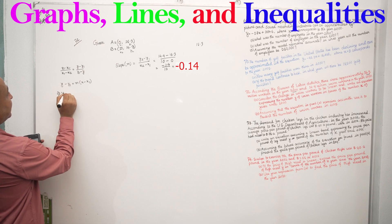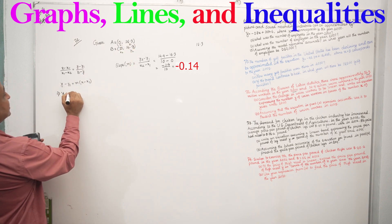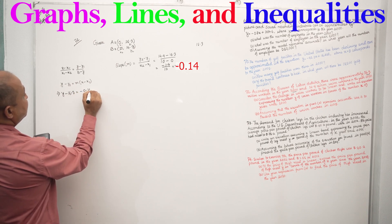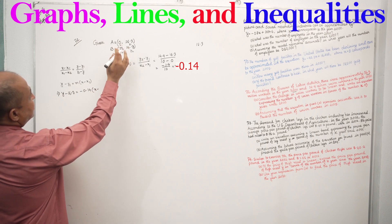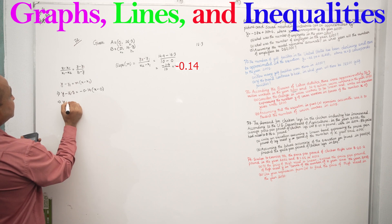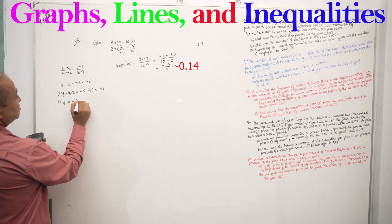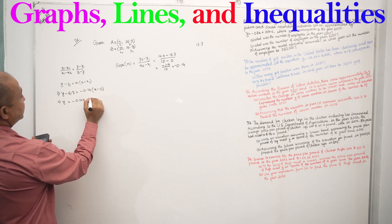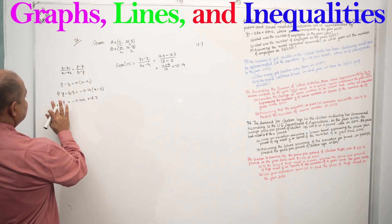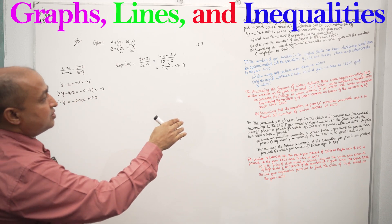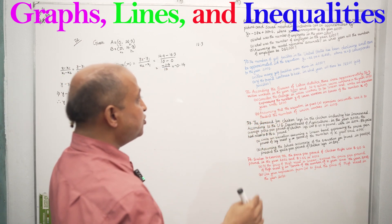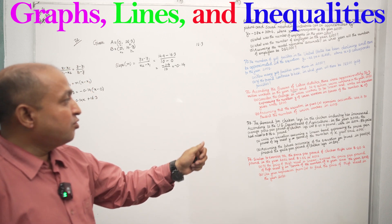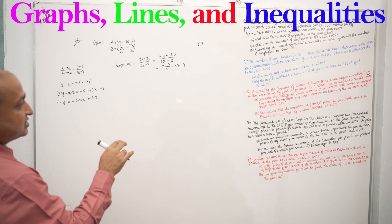Now substituting into point-slope form: Y minus Y1 equals M times x minus x1. Y1 is 16.3, M is minus 0.14, and x1 equals 0. So Y equals minus 0.14x plus 16.3. This is our linear equation. Requirement A was: consider the change in union workers to be linear and write an equation expressing the number Y of union workers in terms of years X since 2000.